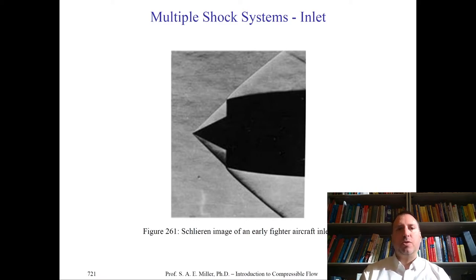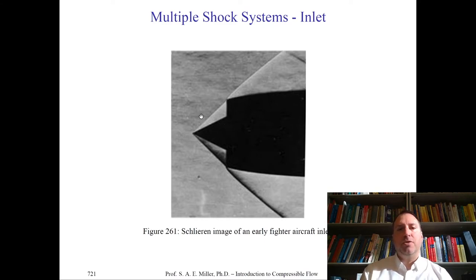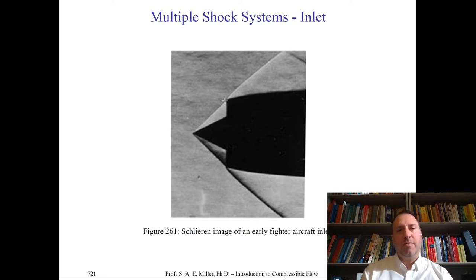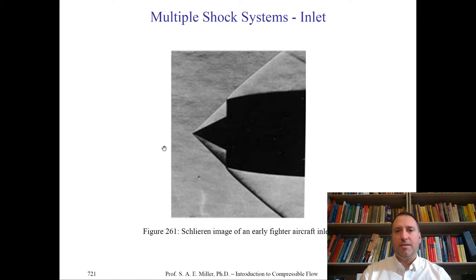These types of images in the early part of the Cold War were closely guarded because the position of the arrow spike and its angle relative to the impingement wave location with the engine cowl lip could be used with the theta-beta Mach number equation to estimate the flight Mach number of the aircraft — which were indeed closely guarded secrets by both the United States and the Soviet Union during the Cold War.